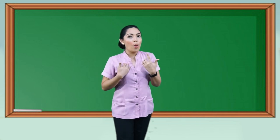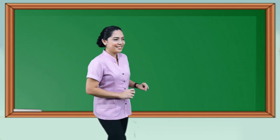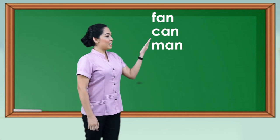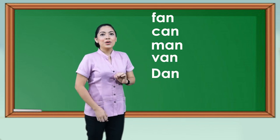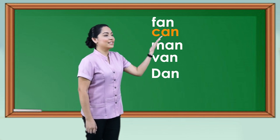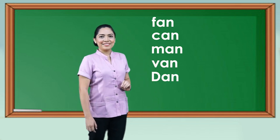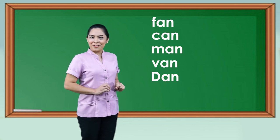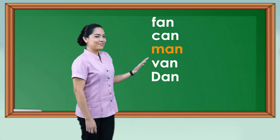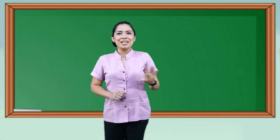Wow, you answered the whole thing perfectly well! This time, let's read the words we have. I will read first while you listen, because later you are going to do it by yourself. Fan. Can. Man. Van. Dan. Repeat after me: Fan. Can. Man. Van. Dan. Now your turn to read by yourself. Hurray! You did it all well. You can now read the words!